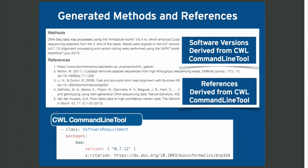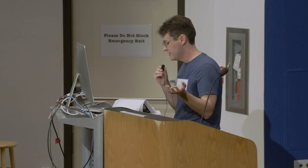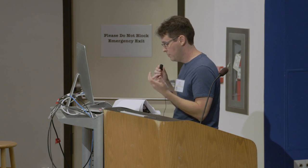Bespin provides documentation about each versioned workflow. Our genomic analysis core suggested we provide methods and references documentation suitable for inclusion in a publication, which they currently do for their customers. This core maintains these documents manually, and it is a tedious process to update this information when version numbers change. To improve this in Bespin, the version numbers in the methods section and the entire references section are both generated based on data stored in CWL tool definitions. So if we update a CWL tool to a later version or update the DOI citation, when the new version is added to the system, the methods and reference section will be updated appropriately.